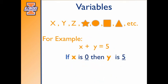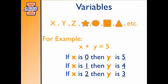For example, if I say that X is equal to 0, then in order to make this number sentence work, Y has to be equal to 5. Or if X is equal to 1, then Y is equal to 4. If X is equal to 2, then Y is equal to 3.